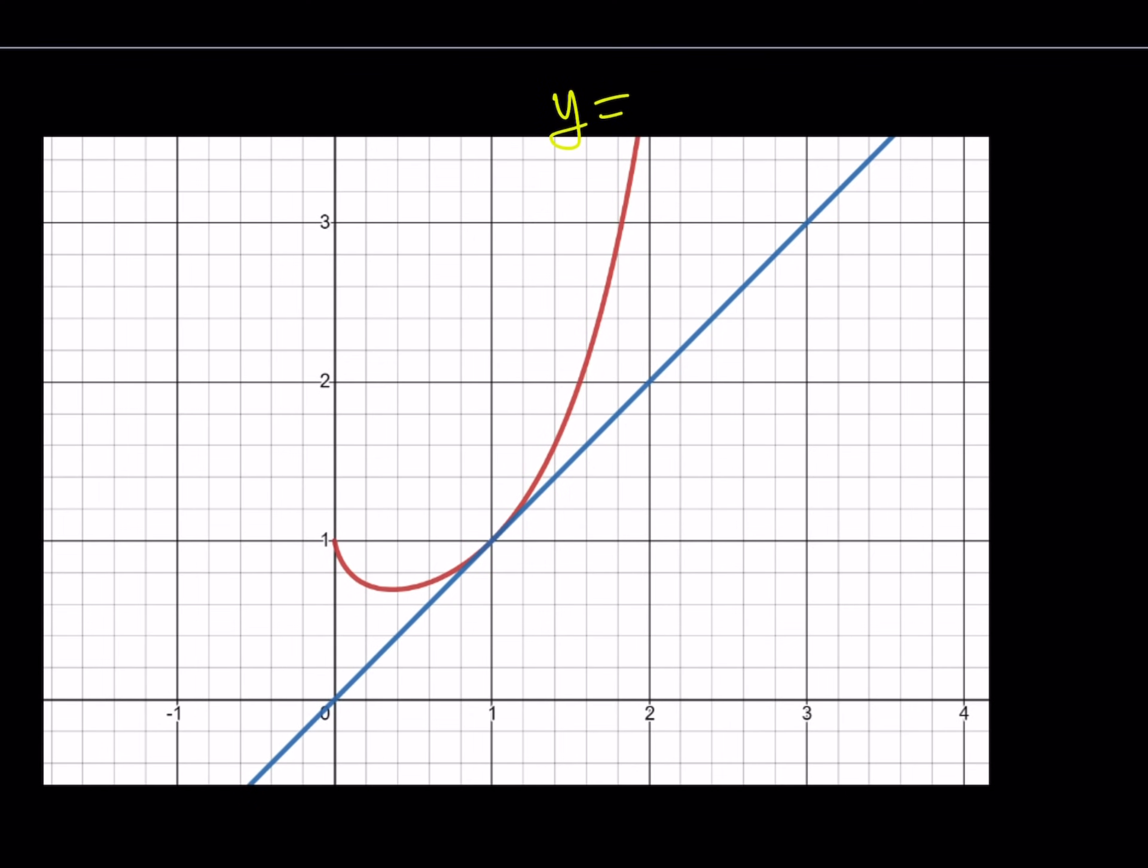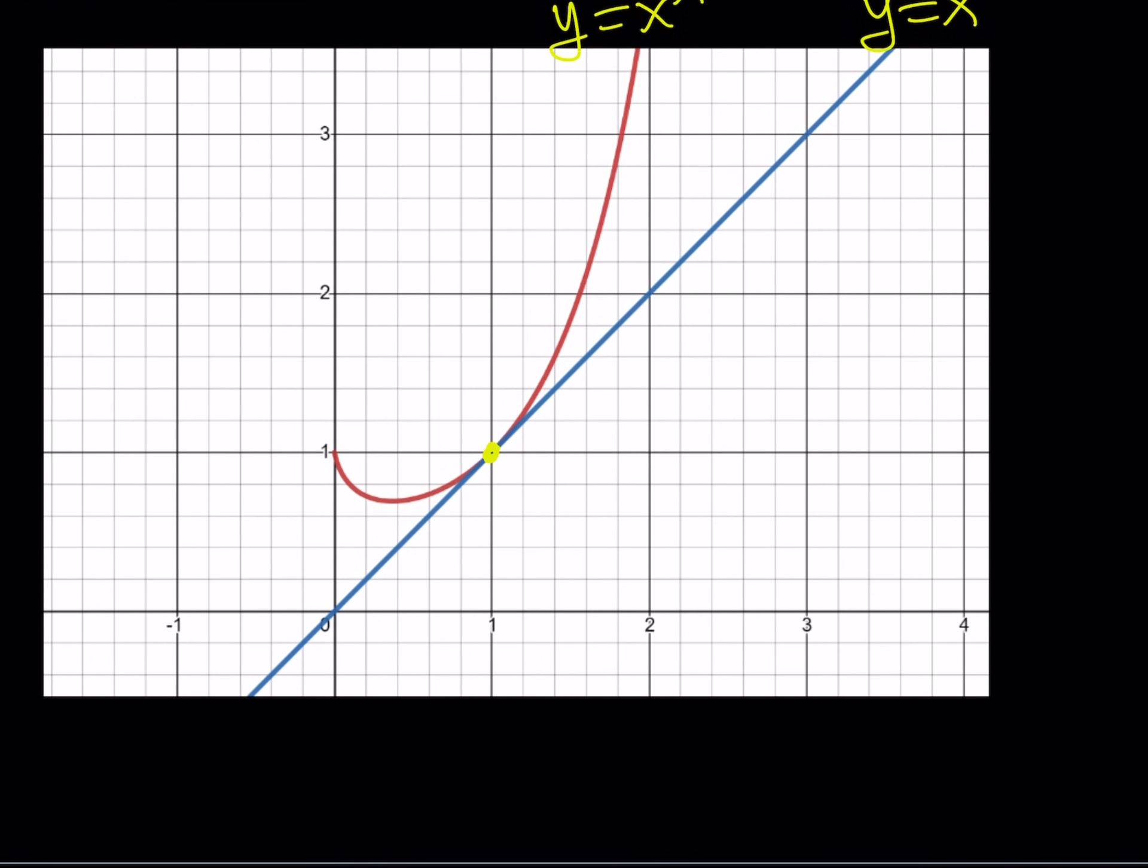So we have the two functions, y equals x to the power x and y equals x intersecting at 1, 1. Therefore, x equals 1 is going to be a solution. But also remember that x equals negative 1 is another solution. So this function has two real solutions.